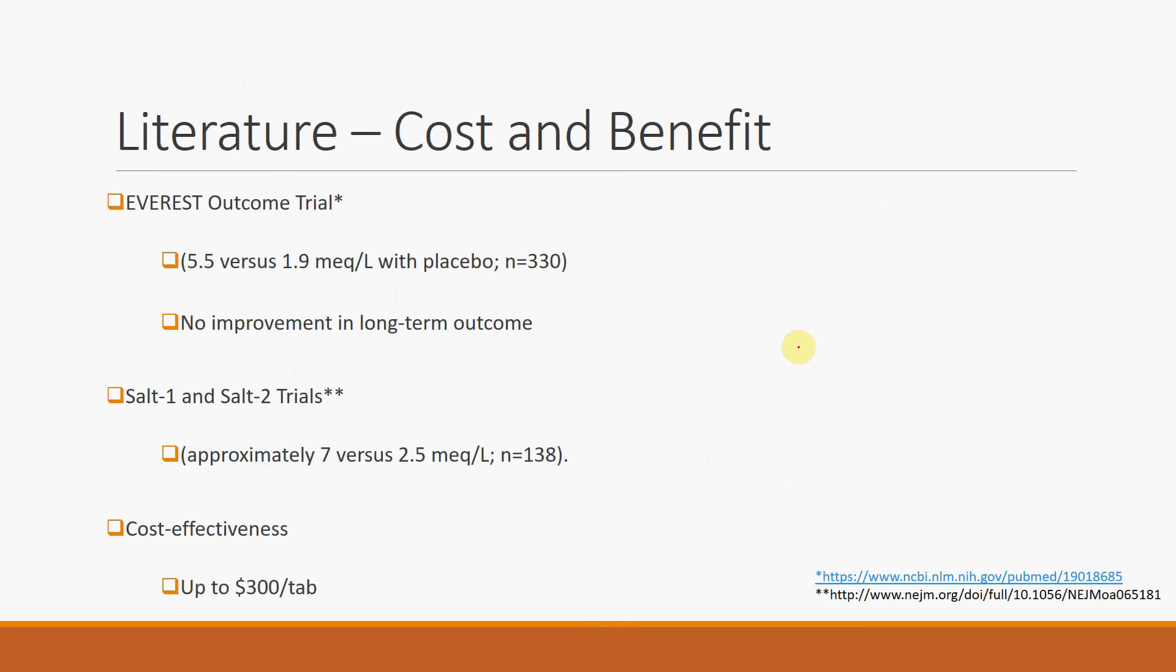So in terms of the literature on the benefit of this drug, we see that on average, patients would be expected to have an increase in 5.5 to 7 in their serum sodium if they were to have an initial serum sodium of about 125. And this is based on two major studies, the EVEREST outcome trial and also the SALT1 and SALT2 trials, n=330 and n=138.